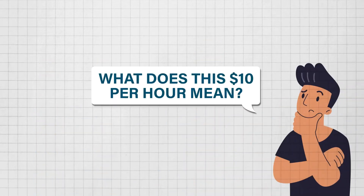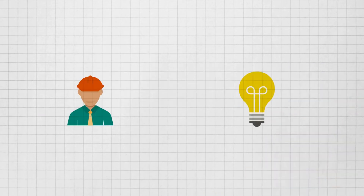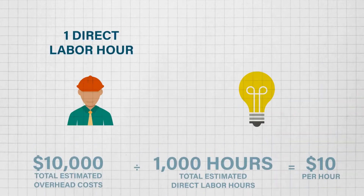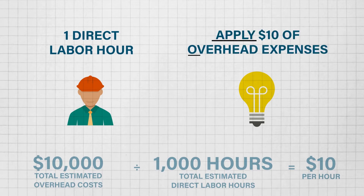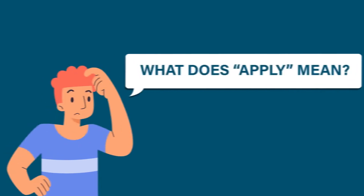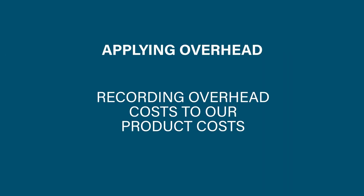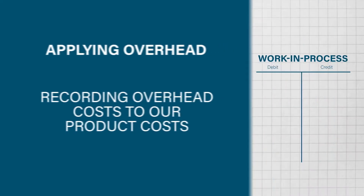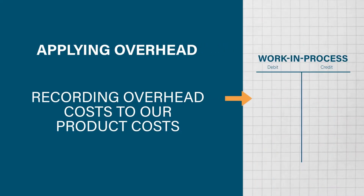What does this $10 per hour mean? It means that for every one direct labor hour we use this month, we're going to apply $10 worth of overhead expenses. Applying overhead means we're recording overhead costs to our product costs — more specifically, we're recording the overhead costs to the work-in-process account.